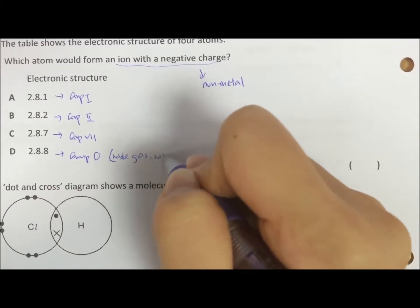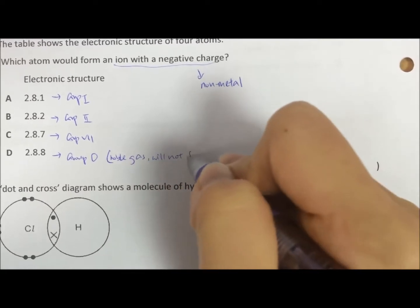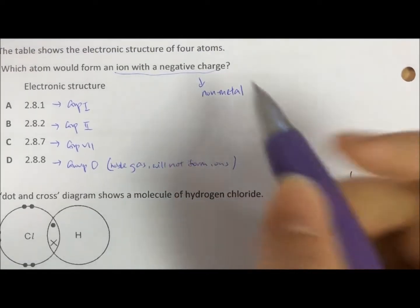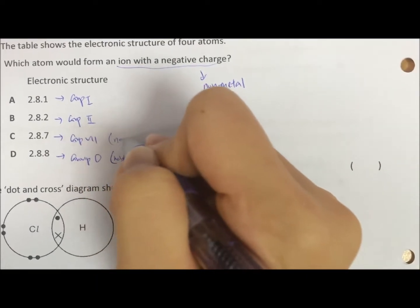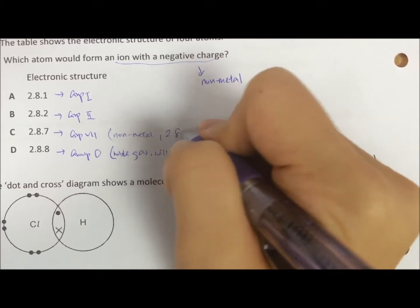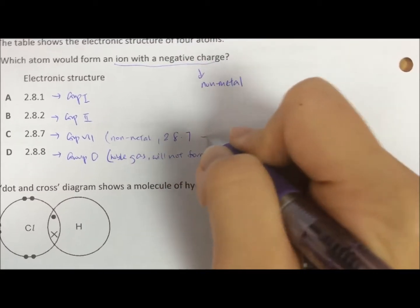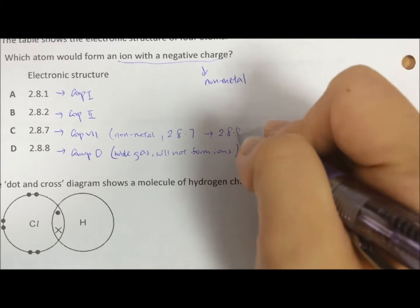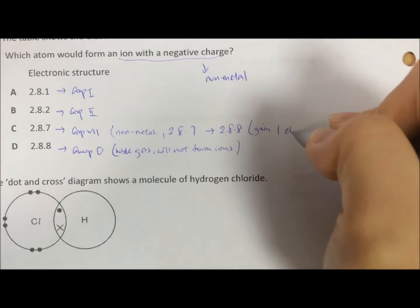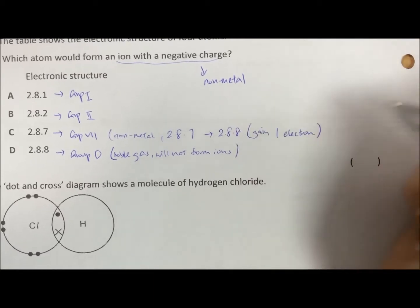Group 0 is a non-metal but it is a noble gas. It will not form an ion because it is unreactive. So group 7, if you see, it is a non-metal from the periodic table. 2.8.7 to become ion will become 2.8.8. So because it gains one electron, electron is negative charge.